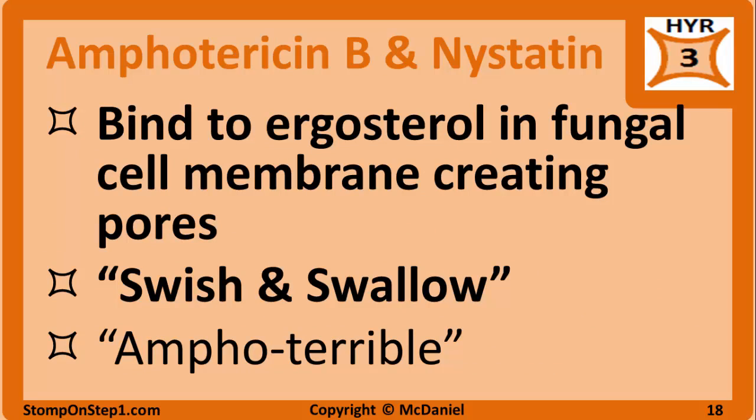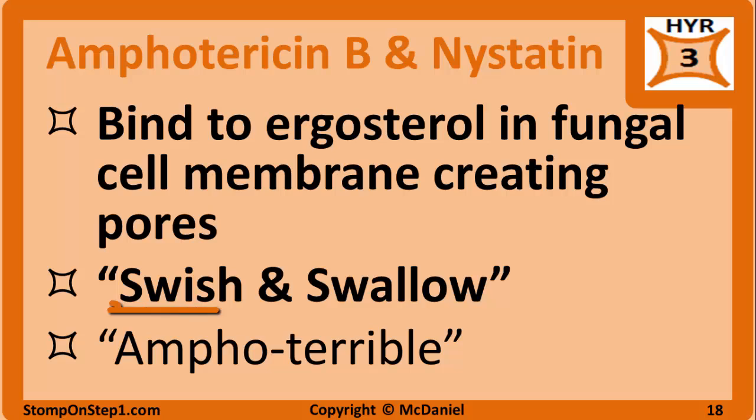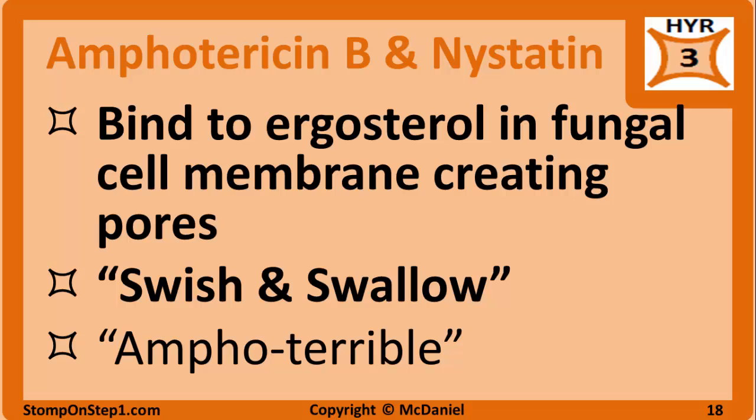Amphotericin B and nystatin bind to ergosterol in fungal cell membranes, creating pores. Nystatin is most commonly used in the form of swish-and-swallow mouthwash for thrush. Amphotericin B is used only for serious systemic fungal infections or fungal meningitis due to its severe side effects. Soon after it is administered, ampho-B can cause fever, chills, and hypotension — also known as shake and bake. This drug is also nephrotoxic.